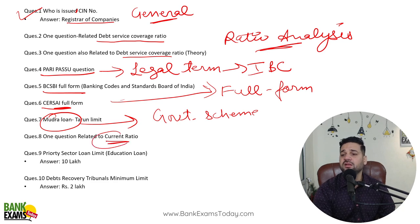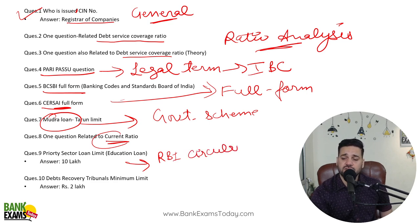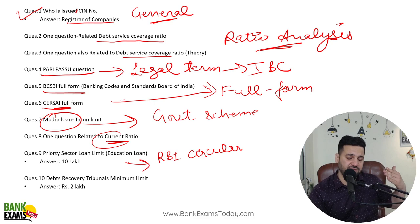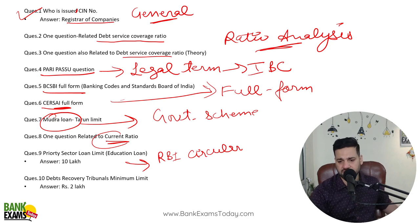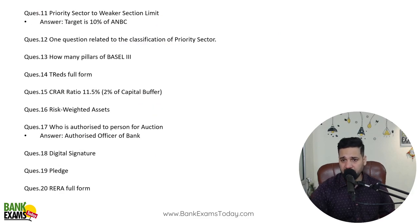One question was related to current ratio — so again, ratio analysis. Priority sector lending — this is a very important RBI circular. I would say it is one of the most important master circulars. On 1st April, a lot of master circulars are released, and whenever there is an update, I make an update in the course. Debt Recovery Tribunal minimum limit — so here IBC and Sarfaisi Act are relevant. Even on YouTube I have done many videos on IBC and Sarfaisi Act, and it's also available in the course. Three questions were directly from priority sector lending.